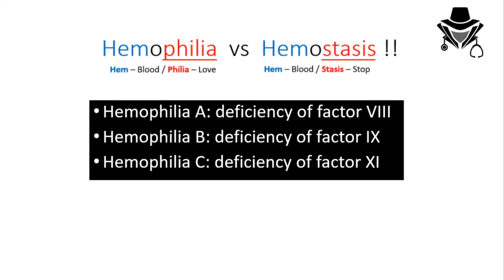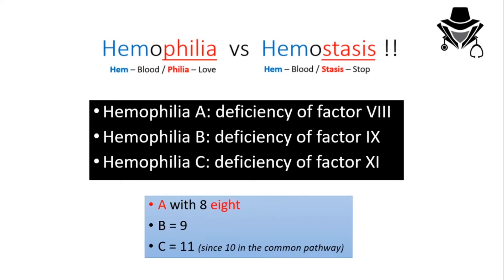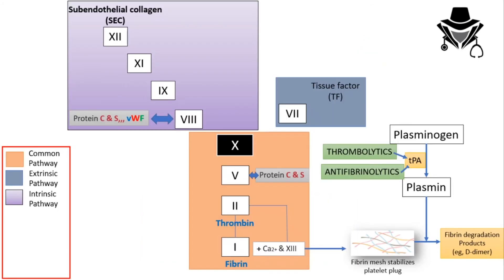Deficiency of a coagulation factor slows or stops the coagulation process, so blood tends to stay liquid — and as a hallmark, patients bleed more than others. To correlate: the pronunciation of A sounds like 8, so hemophilia A is associated with factor 8. Then moving through letters and numbers: hemophilia B with factor 9, and hemophilia C with factor 11 — skipping factor 10, just like in the intrinsic pathway.